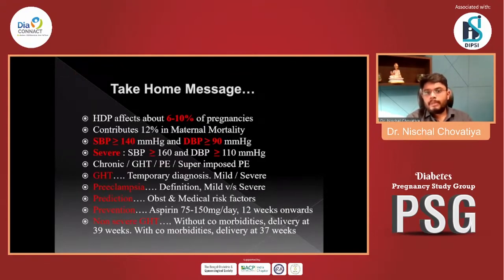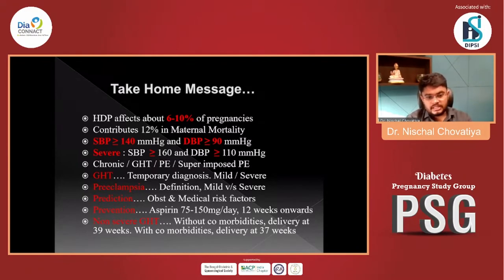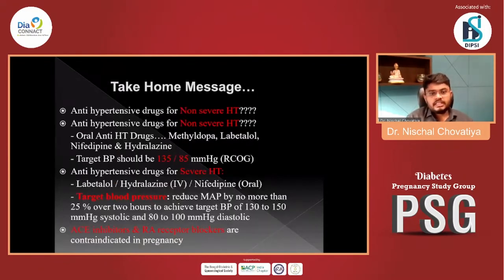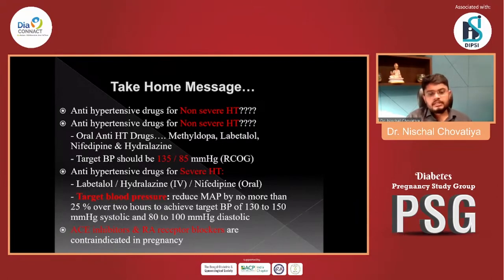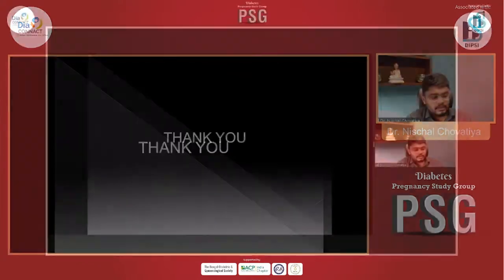Take-home messages: hypertensive disorder in pregnancy affects 6–10% of pregnancies and contributes to 12% of maternal mortality. Systolic BP more than 140 and diastolic more than 90 defines hypertension. Gestational hypertension is a temporary diagnosis. For non-severe hypertension, use anti-hypertensive agents; in severe hypertension, target BP should be less than 135/85. Agents used include labetalol, hydralazine, and nifedipine; target BP less than 130 for severe cases. ACE inhibitors and ARBs are contraindicated in pregnancy.